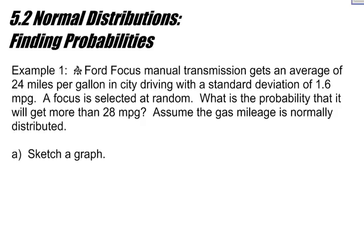A few things as I read through this: A Ford Focus manual transmission gets an average of 24 miles per gallon in city driving with a standard deviation of 1.6 miles per gallon. A Focus is selected at random. What is the probability that it will get more than 28 miles per gallon? Assume that gas mileage is normally distributed.